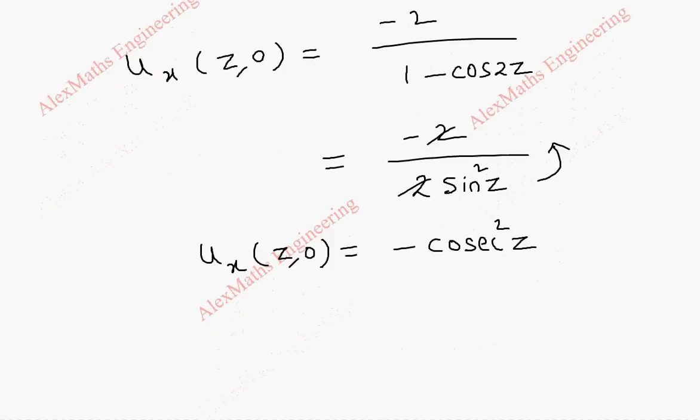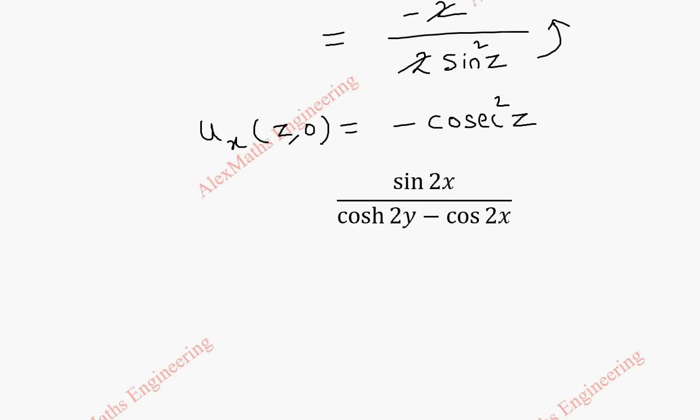In the same way we have to find u_y. So I have copied the u term once again for reference. Now we are going to do u_y using the quotient rule we are going to differentiate. Differentiation of the numerator becomes 0 and into we have to write this. Anyway that is 0 minus numerator we have to write as it is.